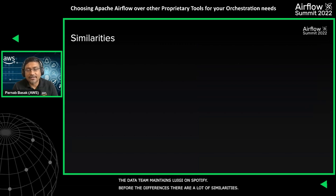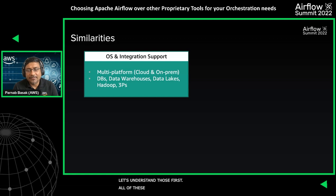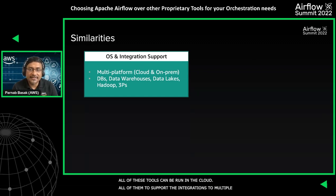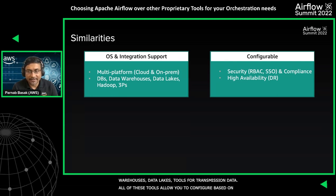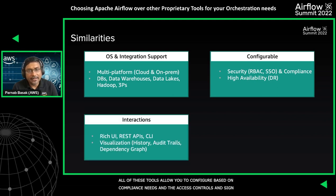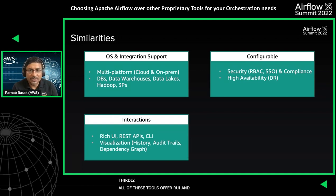Before we talk about the differences, there are a lot of similarities that all of these tools offer. First and foremost, all of these tools can be run both on-premises and in the cloud. All of them support robust integrations to multiple databases, data warehouses, data lakes, big data systems, and third-party tools. Secondly, all of these tools allow you to configure role-based access controls, single sign-on, high availability, DR, etc. Thirdly, all tools offer a rich UI, REST API, and CLIs to interact with — except Luigi, which does not have REST API support yet.